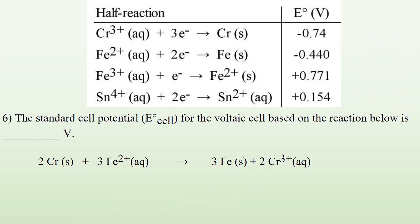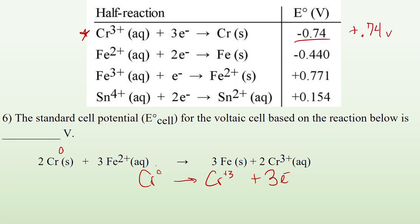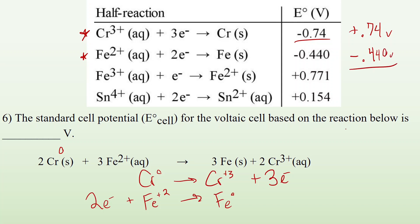Number 6: the standard cell potential for the voltaic cell based on the reaction below. I start with CR zero and end up with CR³⁺, so CR zero arrow CR³⁺ must have lost three electrons. I look for the opposite process — it's this half reaction. Since it's negative 0.74 in the opposite direction, I change the sign to positive 0.74 volts. Now Fe goes from plus two to Fe zero — it must have gained two electrons. I find Fe²⁺ becomes Fe zero right here. Because it's exactly as written, I don't change the sign: negative 0.440 volts. Combining those together, I end up with positive 0.30 volts.